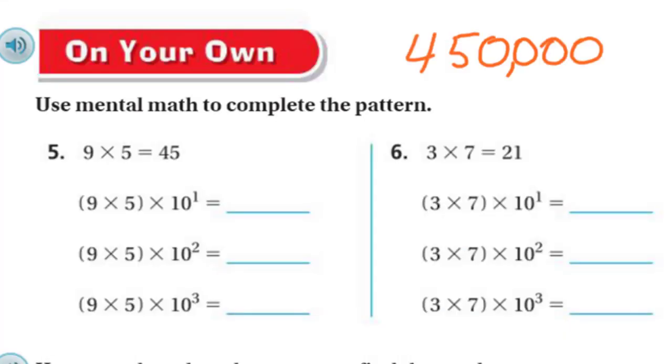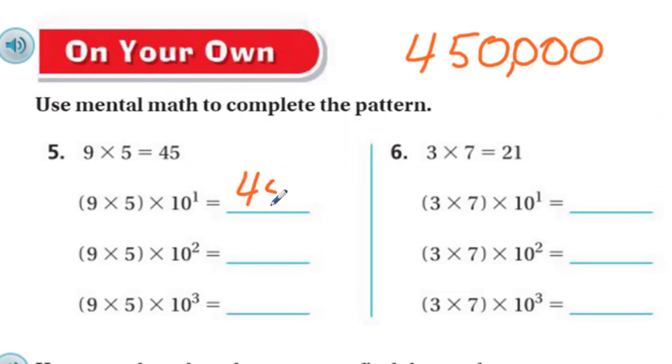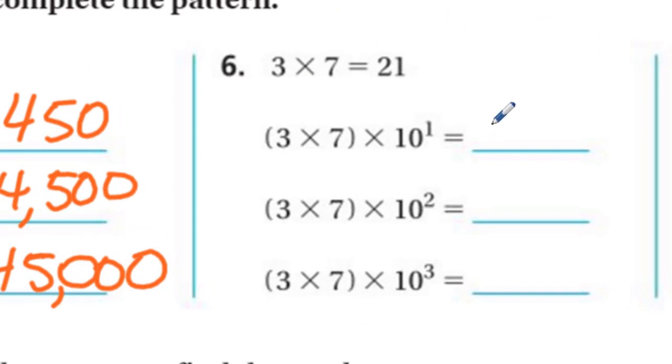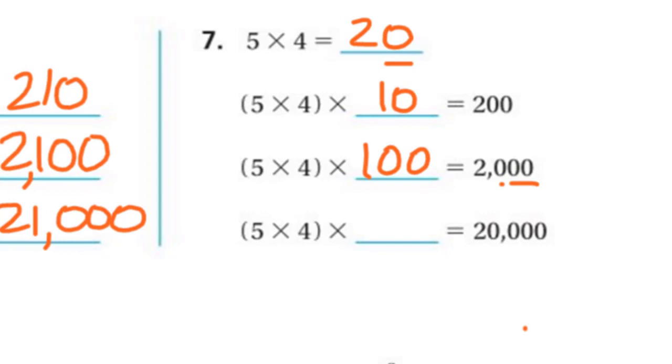On your own. Use mental math to complete the pattern. 9 times 5 equals 45. Wait a second, we kind of already did these, but it's like we're on our own. So 450, 4,500. Now I have 45, and then 1, 2, 3: 45,000. If you have the power of 10, that's the easiest way to do these. 21. Now we have 210, 2,100, and 21,000. You have to be careful with these because it already ends in a zero. 5 times 4 is 20. We need one more, so we're going to multiply it by 10 to get that. Then times 100, and then times 1,000.